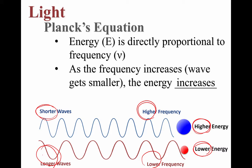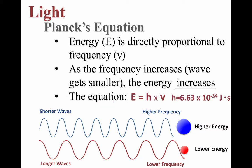We can express this relationship mathematically. Energy is directly related to frequency — that's a direct proportion. If we want to turn this into an equation, we use the equal sign and insert a constant. That constant is abbreviated with the symbol H, which stands for Planck's constant. The equation is E equals H times nu. We always use the value 6.63 times 10 to the minus 34th, with units of joule seconds.